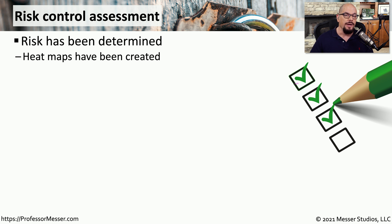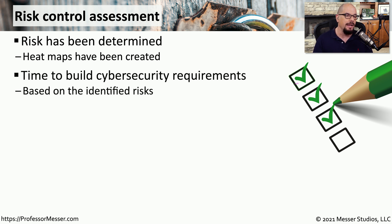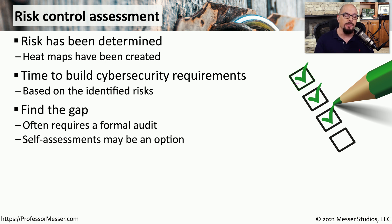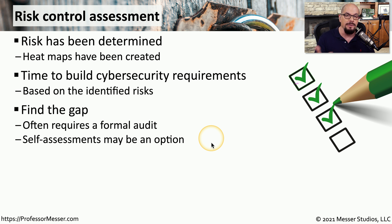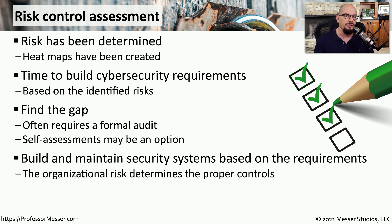Now you've done the work of identifying where the risks might be and created a heat map so you understand exactly how that might affect the organization. So now it's time to create the cybersecurity requirements around these identified risks. We need to determine where those gaps might be in our security posture, and this may require a formal audit to have someone evaluate every aspect of our organization and understand where those gaps might be. In smaller organizations, you may be able to do a self-assessment to find those gaps, and once you understand where they are, you can build security controls to fill in all of those risky areas.